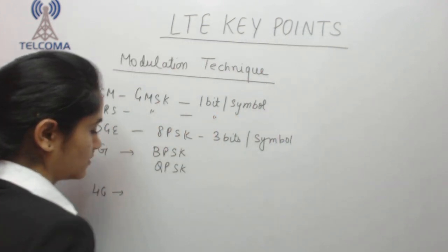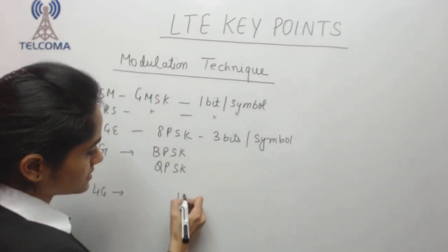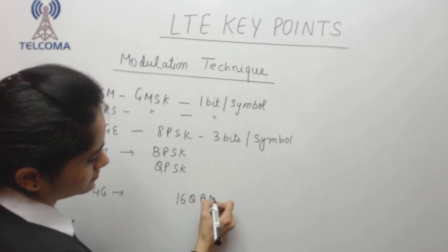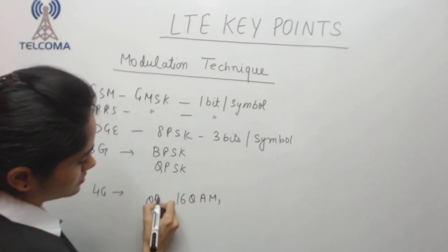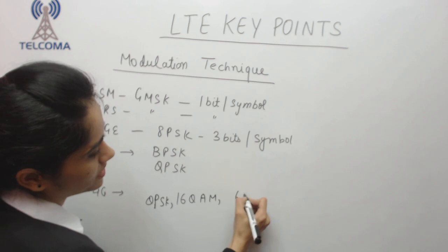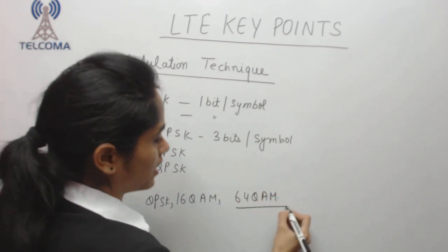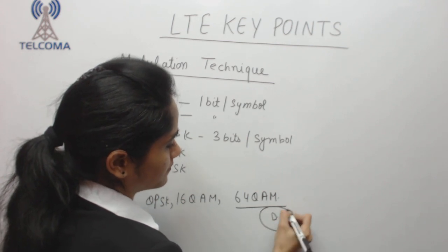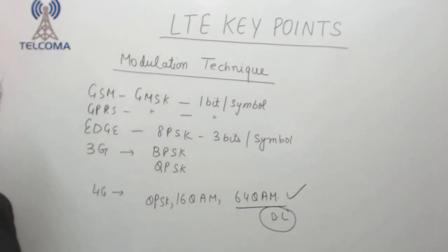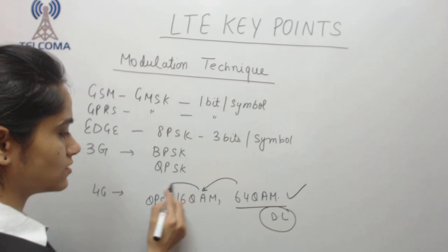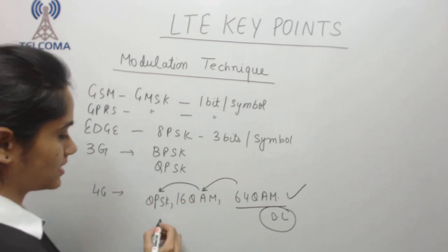That's why we have to increase the modulation technique also. Now this is working on QPSK, 16 QAM and 64 QAM. So mostly this is for downlink. We will have downlink technique as 64 QAM. We can shift to these also as per the conditions and uplink is supporting these.